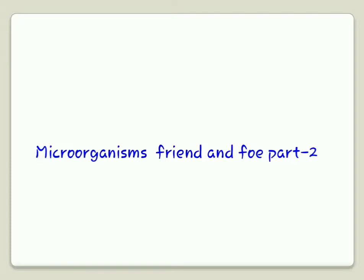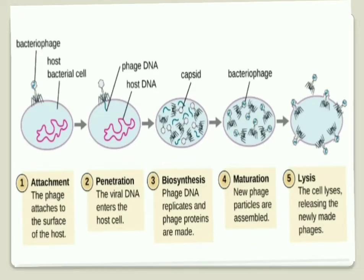Today I would like to show you a picture of how a virus attacks a bacterial cell. In the first video I told that viruses attack plants, animals, and bacteria. Today I would like to show how a virus attacks a bacteria. In this picture you can see a bacterial cell, and the pink color is the genetic material of the bacteria.